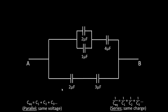Now let's solve this problem. Looking at the circuit, each capacitor has been given numerical values, and C3 is the 4 microfarad capacitor. So we're solving for the voltage across this 4 microfarad capacitor. Notice the rules for parallel and series capacitors are shown in the bottom corners for reference.